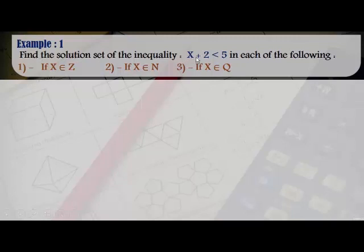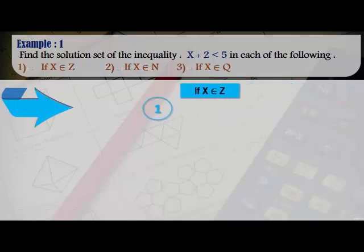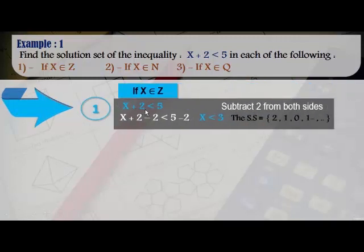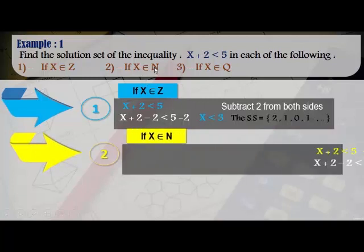Example 1: Find the solution set of the inequality x plus 2 is less than 5. Number 1: if x belongs to Z, the set of integers. By subtracting 2 from both sides: x plus 2 minus 2 is less than 5 minus 2, giving x is less than 3.